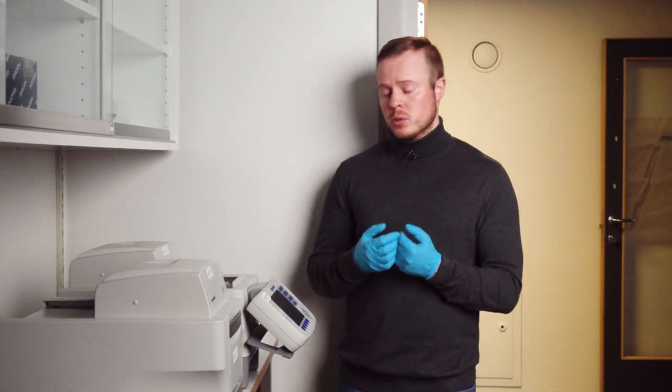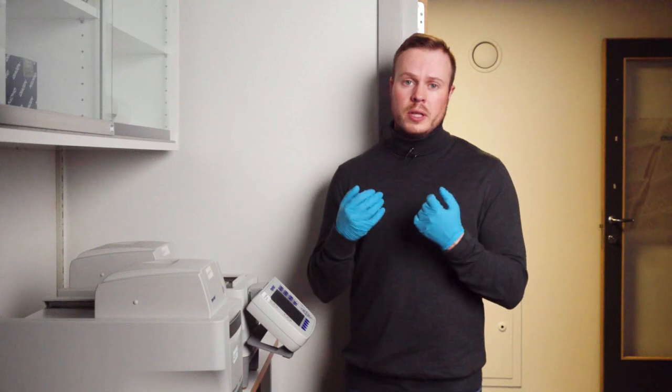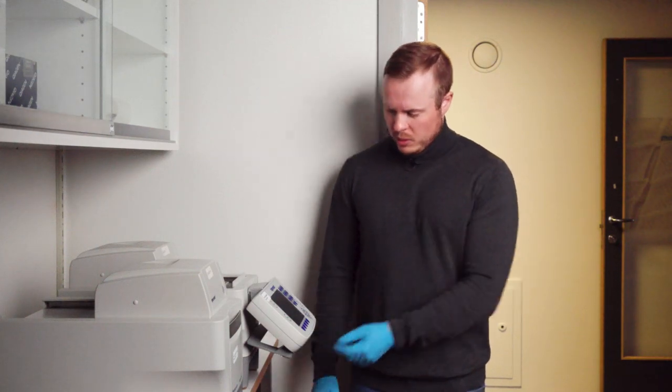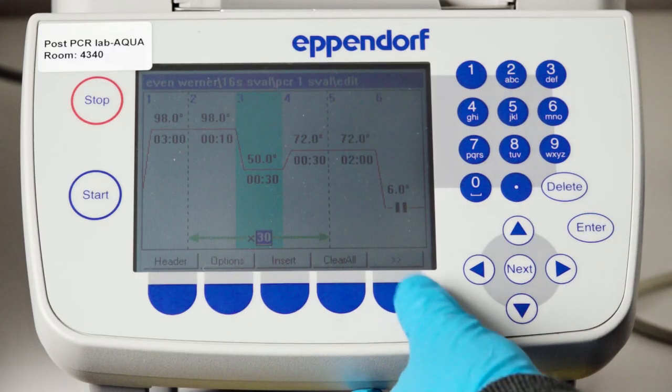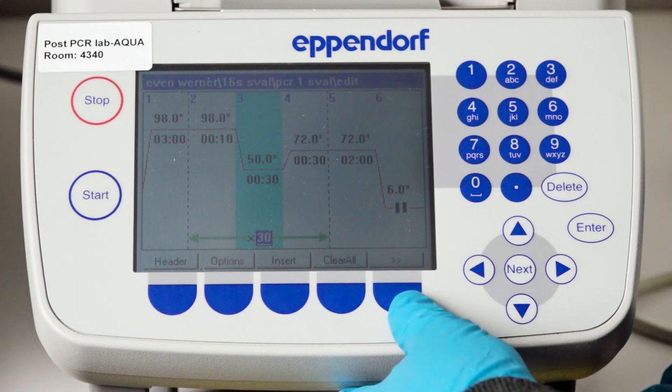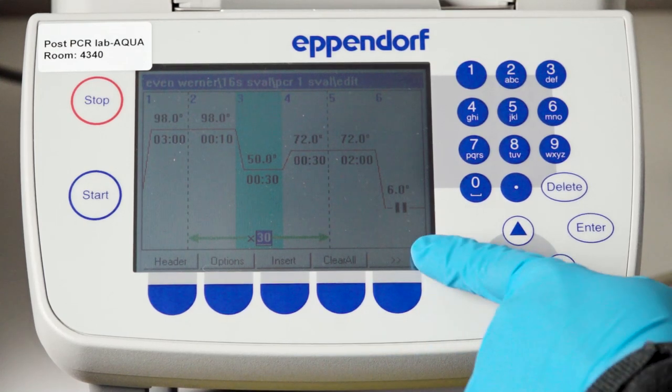The less cycles you can manage is always better because it doesn't make as many primer dimers. But sometimes you have samples with quite low amount of DNA and then you need to increase the cycles.